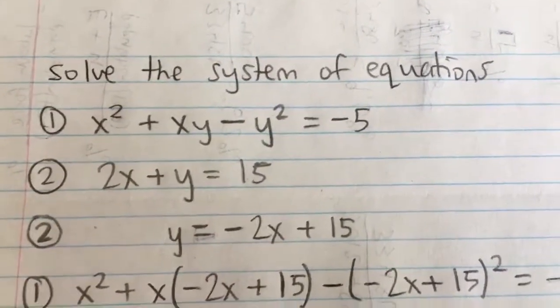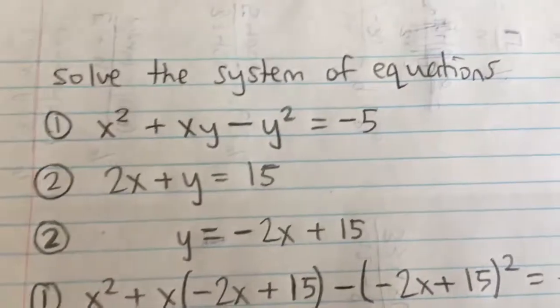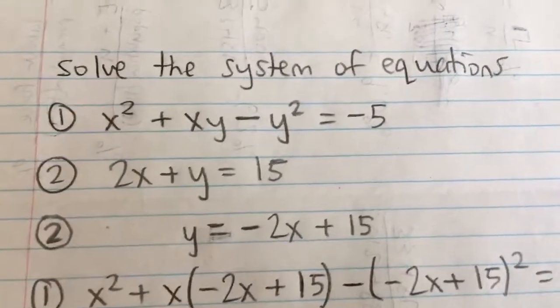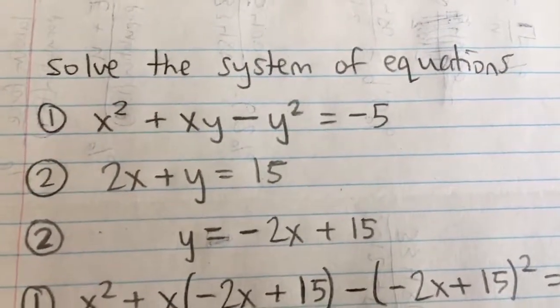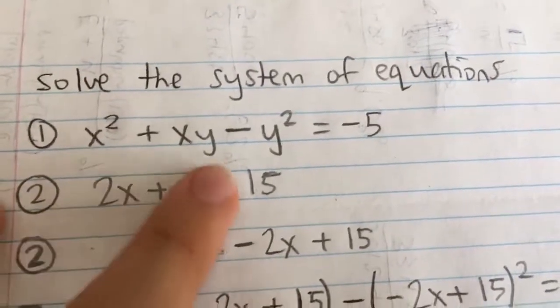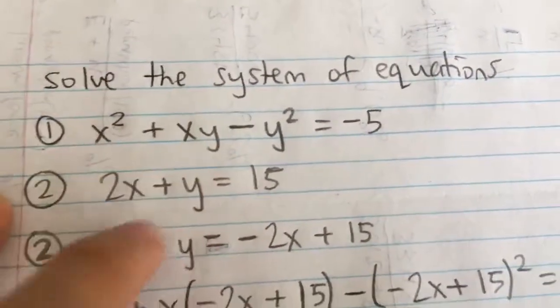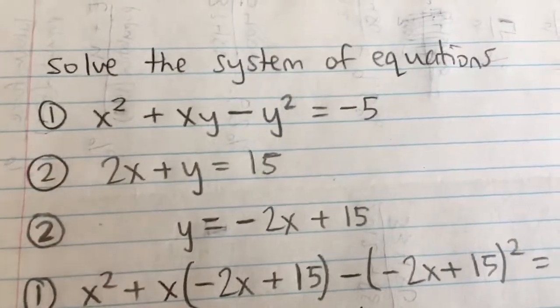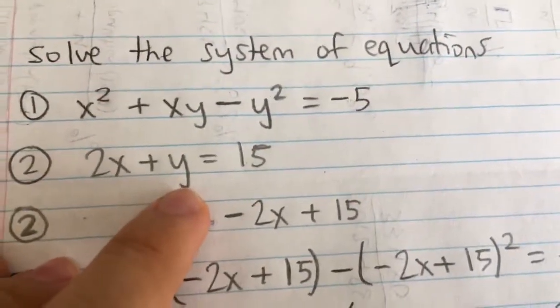There are two ways to solve systems of equations: one's by elimination and one's by substitution. Now here it's kind of hard to use elimination because we have some squared terms and some product of xy. So I'm going to use substitution because we can easily solve for y in the second equation.